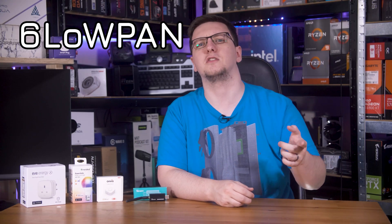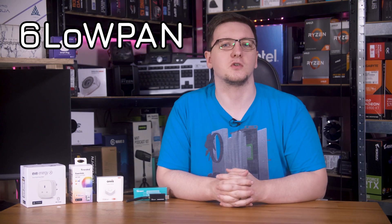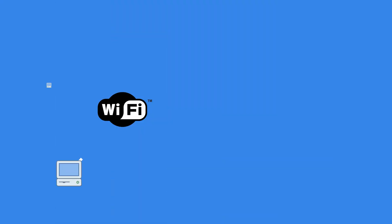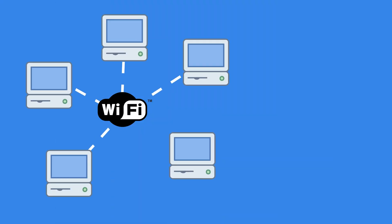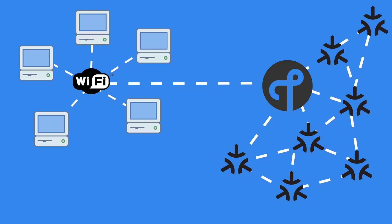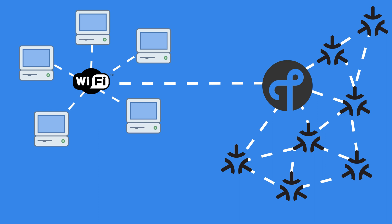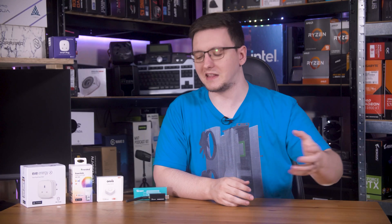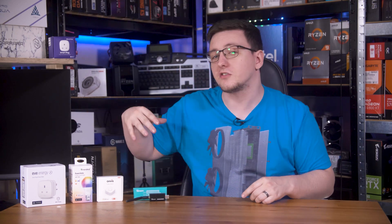Thread actually uses 6LoWPAN — or IPv6 over low-power wireless personal area networks. Catchy, I know. Basically, unlike Wi-Fi which uses the hub-and-spoke model where you connect to a single access point and only to the access point, Thread uses a mesh network where most devices will talk to each other and be able to relay messages. So even if your furthest-away little sensor can't reach your hub, the message can still bounce across the various other devices in your network until it gets to the hub.